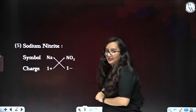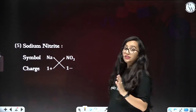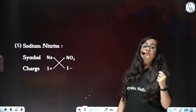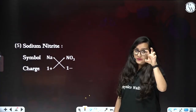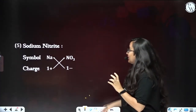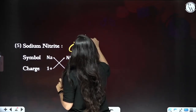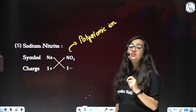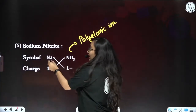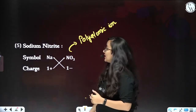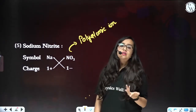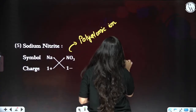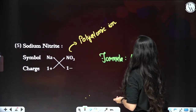Next is sodium nitrate — this involves a polyatomic ion. Sodium is Na and nitrate is NO₃ — we take NO₃ as a whole. We write Na with charge plus 1 and NO₃ with charge minus 1. Cross-multiplying: this becomes NaNO₃. There is no need to write 1 — by default one is understood. That is how you write formulas for polyatomic ions.